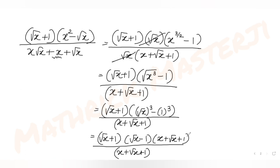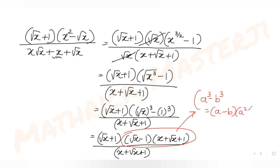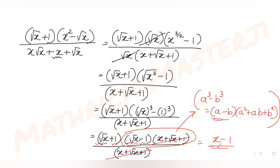Using a³ - b³ = (a - b)(a² + ab + b²), we get (√x - 1)(√x² + √x·1 + 1²) = (√x - 1)(x + √x + 1). The bracket (x + √x + 1) is the same in numerator and denominator, so it cancels. We are left with (√x - 1)(√x + 1), which is a² - b² = x - 1. So the algebraic expression simplifies entirely to x - 1.